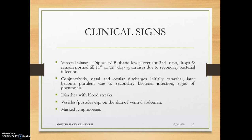Clinical signs include conjunctivitis and nasal and ocular discharge, as the virus multiplies in the upper respiratory tract. It moves to the lacrimal duct causing conjunctivitis, and after infecting the bronchial lymph nodes, moves directly to the lungs causing interstitial or viral pneumonia. Diarrhea occurs as the virus enters intestinal tract cells, creating electrolytic imbalances and causing hemorrhage by bursting endothelial cells. The virus invades and kills lymphoid cells, causing lymphopenia.